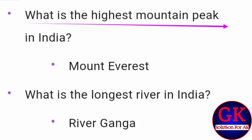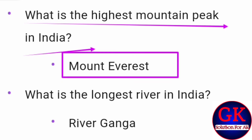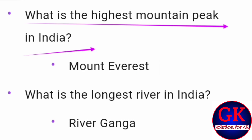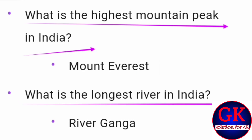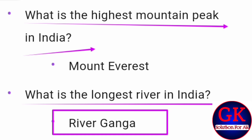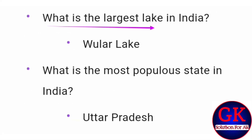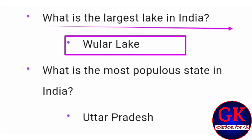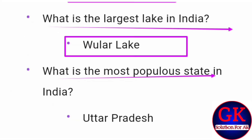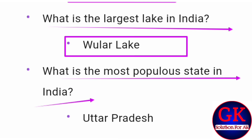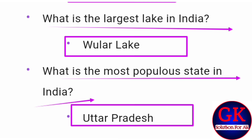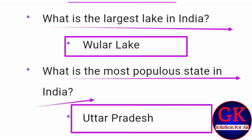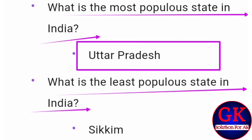What is the highest mountain peak in India? Right answer: Mount Everest. What is the largest river in India? Right answer: River Ganga. What is the largest lake in India? Right answer: Wular Lake. What is the most populous state in India? Right answer: Uttar Pradesh.